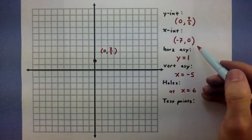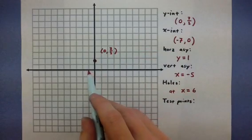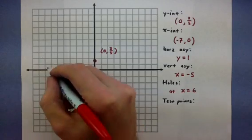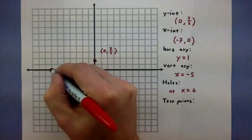I have another place that it goes through at negative 7, 0. So, negative 1, 2, 3, 4, 5, 6, 7. So, it goes through right there.